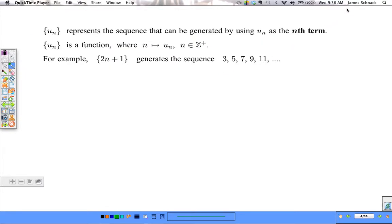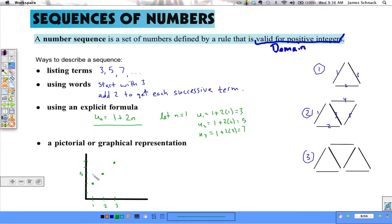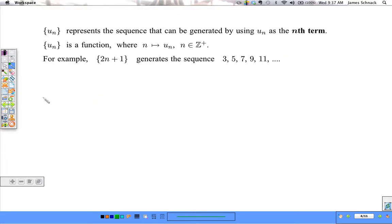So here's a little bit more notation. We've seen these squiggly brackets. u sub n in these squiggly brackets just tells us that that is going to be the sequence generated by that u_n that's inside these squiggly brackets. It is a function. If you go back to our graph, you might recall something called the vertical line test. This passes the vertical line test. Or another way to think about it, there is only one figure that goes along with each stage of this construction. So there's a function that takes n and maps it to u sub n for all n that is an element of the positive integers.